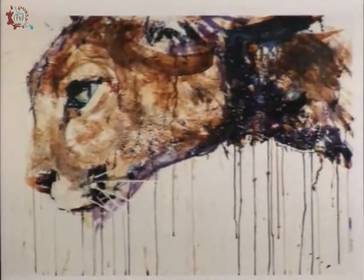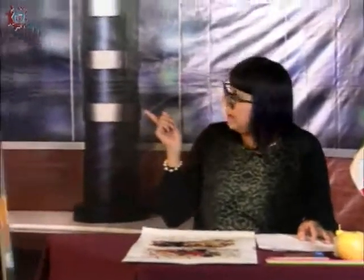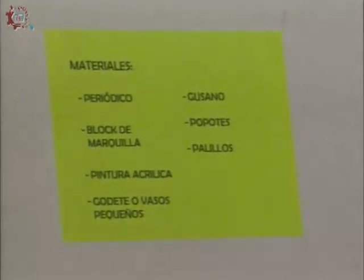La actividad que vamos a realizar para este bloque es un dripping. ¿Cómo lo vamos a hacer? Primero vamos a necesitar los siguientes materiales: periódico, el blog de marquilla, pintura acrílica, un godete o vasos pequeños, un gusano, popotes, palillo, gotero y quizás una jeringa.